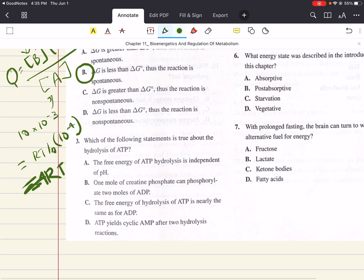C says, which of the following statements is true about the hydrolysis of ATP? The free energy of ATP hydrolysis is independent of pH. One mole of creatine phosphate can phosphorylate two moles of ADP. The free energy of hydrolysis of ATP is nearly the same for ADP. And D says ATP yields cyclic AMP after two hydrolysis reactions. And we're trying to find which statement is true.